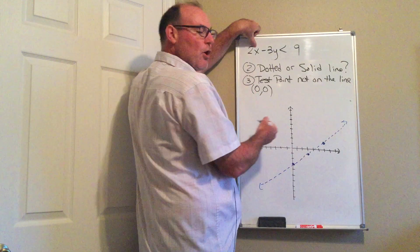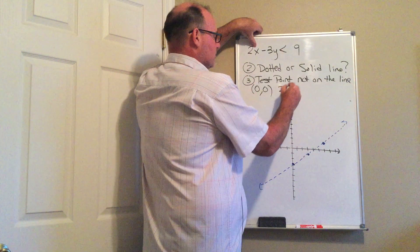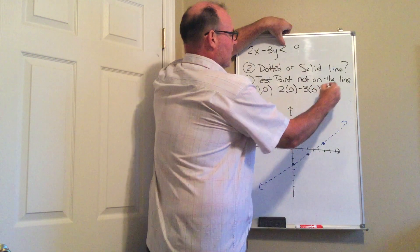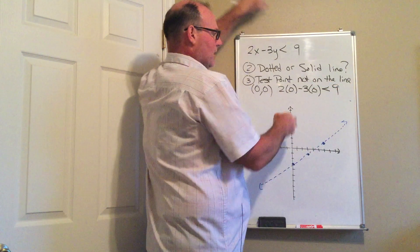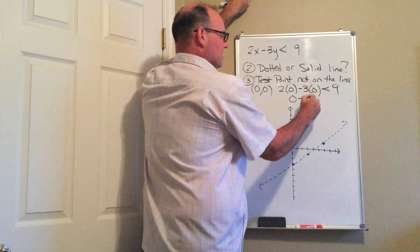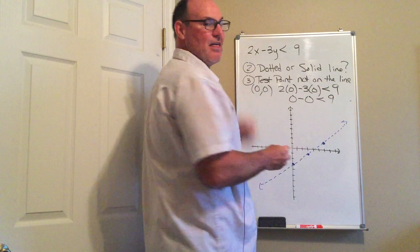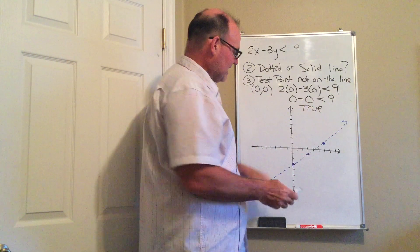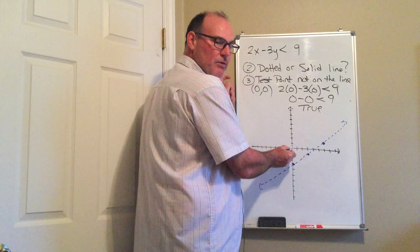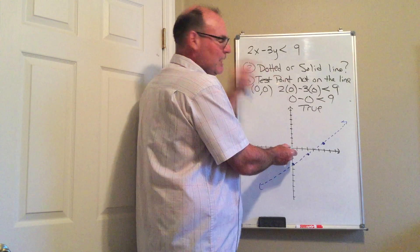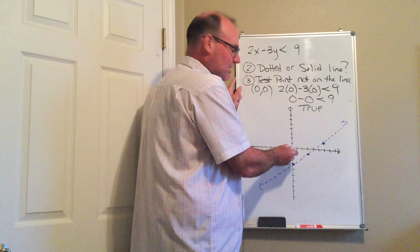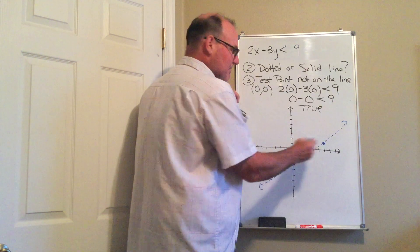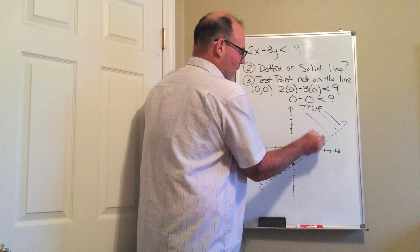So I go back to the inequality: 2 times 0 minus 3 times 0 — is that less than 9? 0 minus 0 is less than 9. That is a true statement. So my test point was right here and it created a true statement, meaning it is a solution. That means all the solutions to this inequality are on the same side, and so I'm going to shade over here. These are the solutions to this linear inequality.